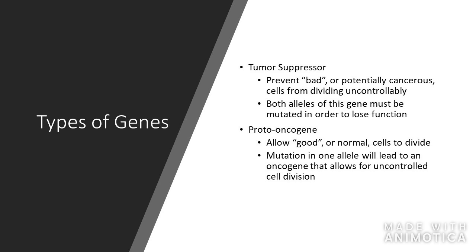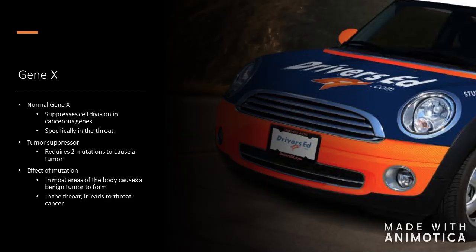For our types of genes, we have a tumor suppressor that prevents potentially cancerous cells from dividing uncontrollably — both alleles of this have to be mutated in order to lose function. We also have a proto-oncogene that promotes normal cells to divide; a mutation of one allele will lead to an oncogene that allows for uncontrolled cell division.